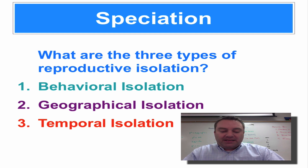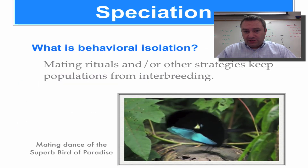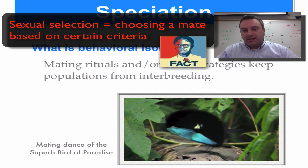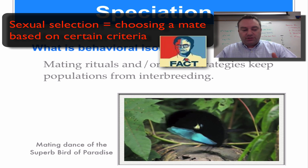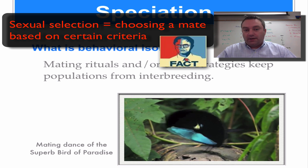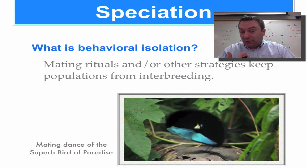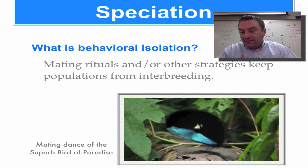Behavioral isolation is related to a process called sexual selection. Sexual selection is a type of natural selection where you're choosing to mate with one individual over another. In human beings, it could come down to looks, occupation, how much money you have, or personality — all parts of sexual selection.